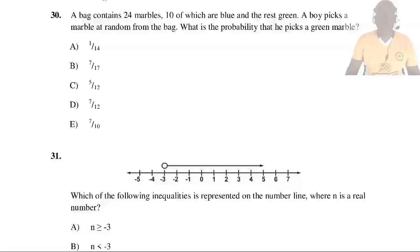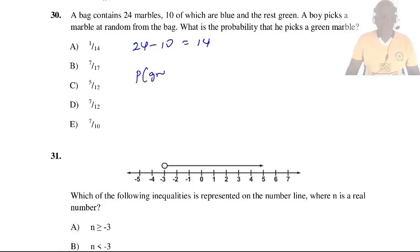Question 30: A bag contains 24 marbles, 10 of which are blue and the rest green. A boy picks a marble at random. What is the probability that he picks a green marble? Number of green marbles = 24 − 10 = 14. Probability of green = 14/24 = 7/12. So the answer is D.